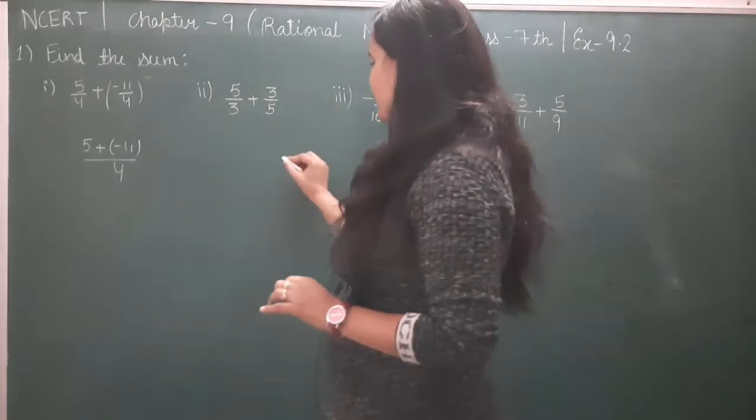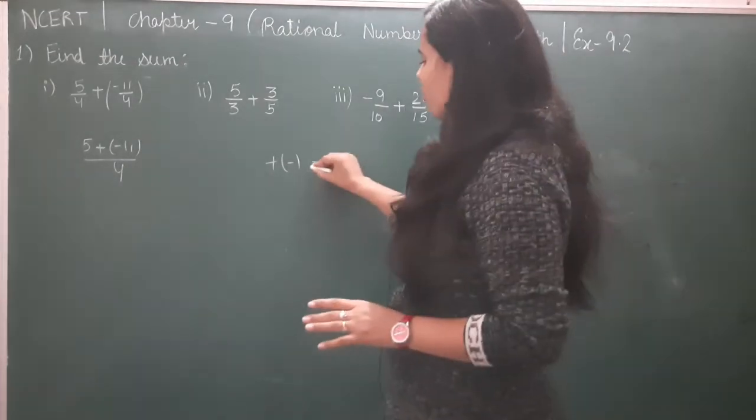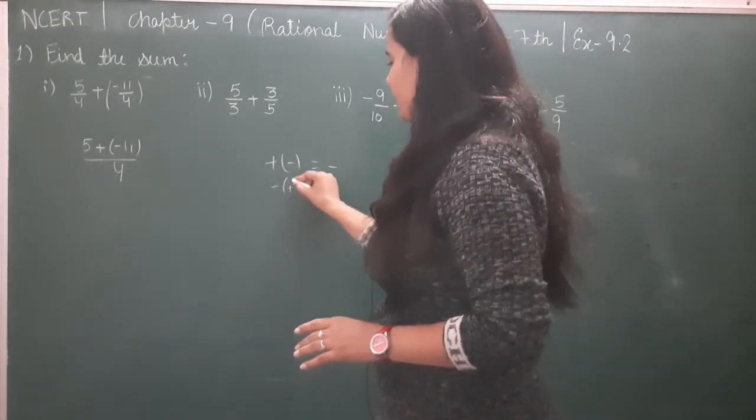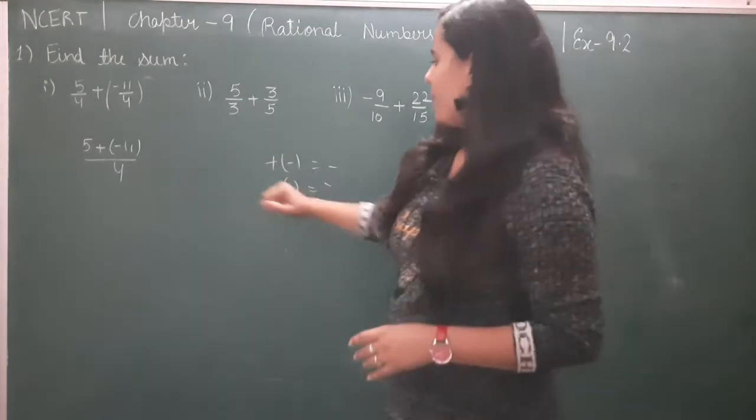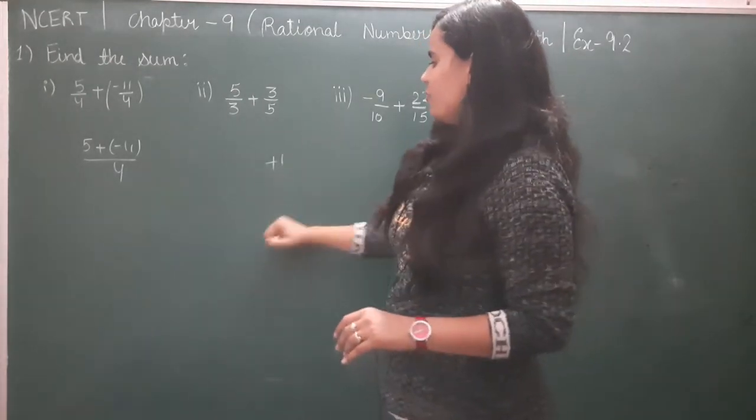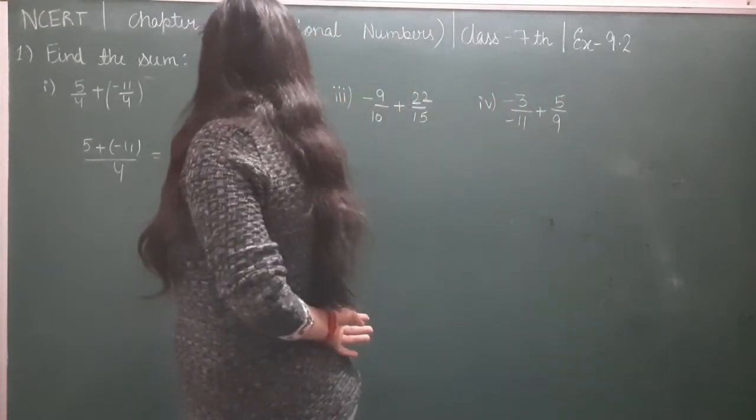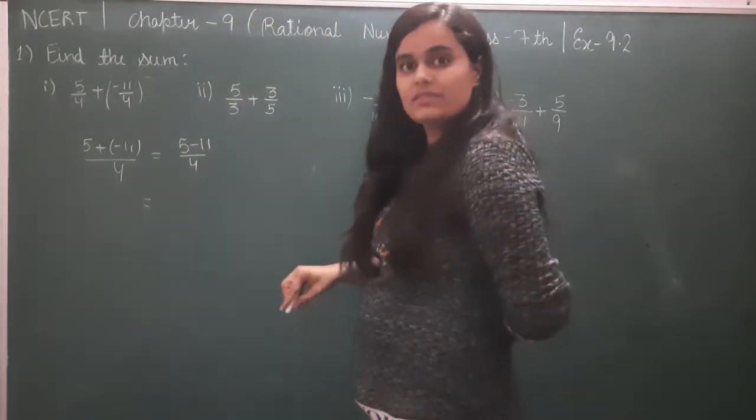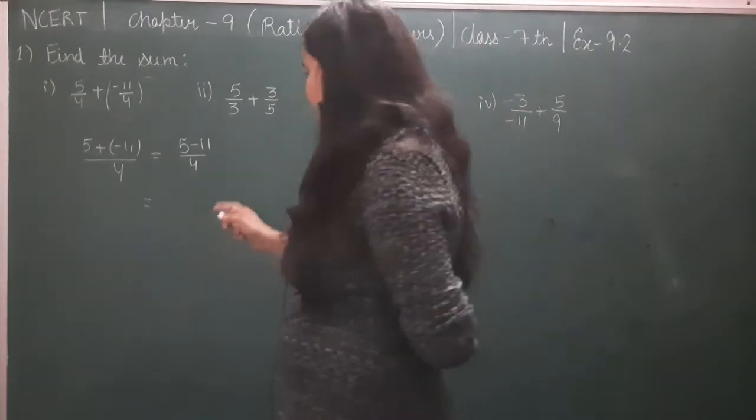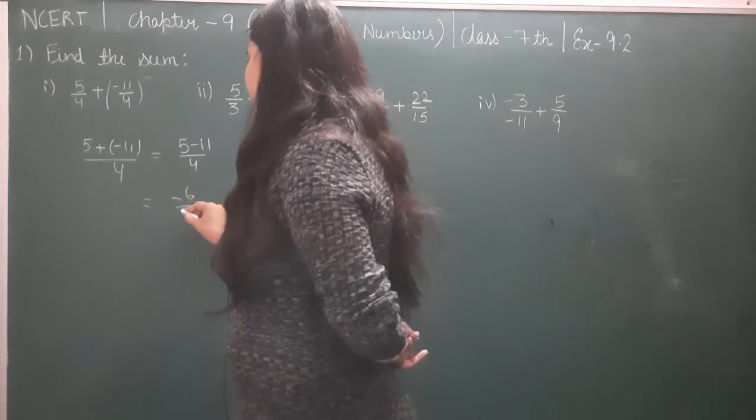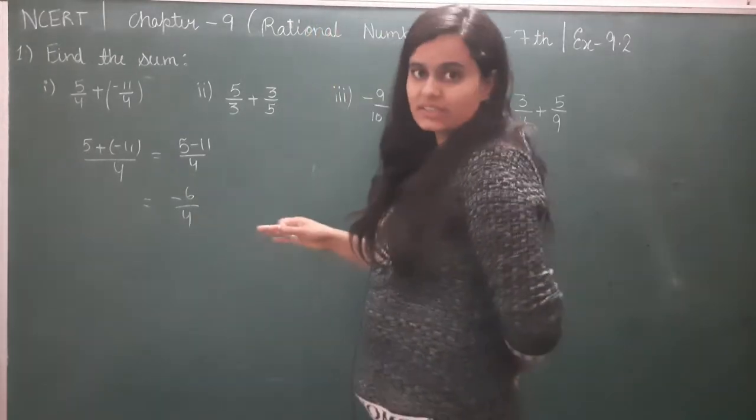So 5 plus minus 11. You learned in the integers chapter that when you have opposite signs - one positive, one negative - you subtract them and take the sign of the greater number. Here it's 5 minus 11, which equals minus 6/4.